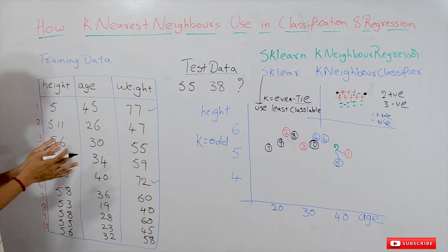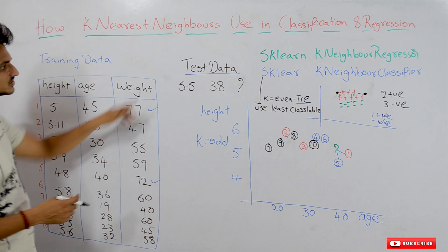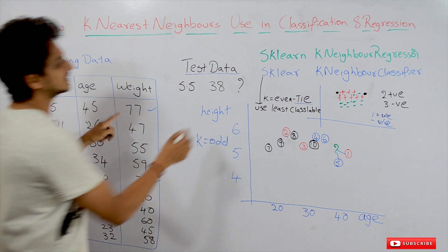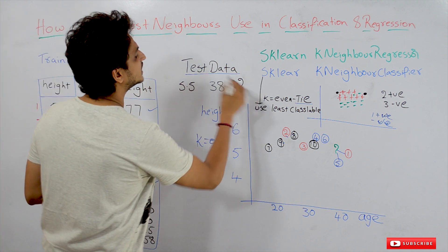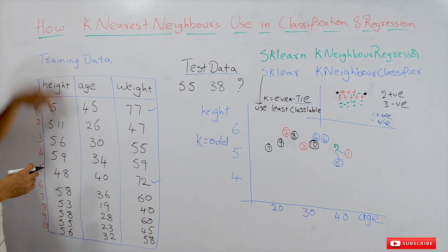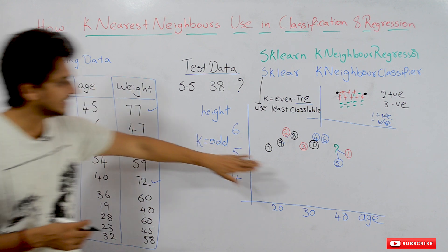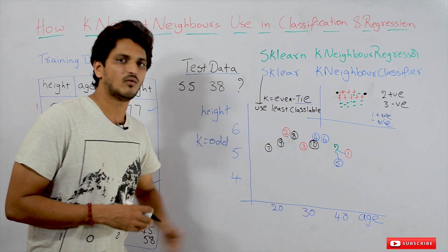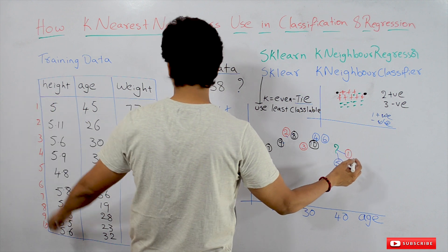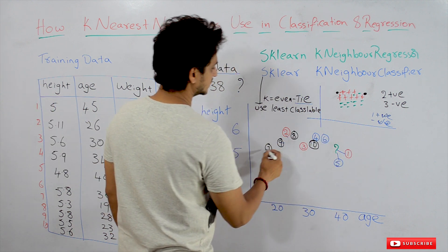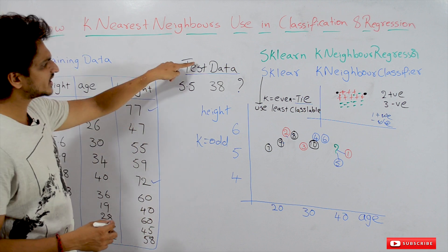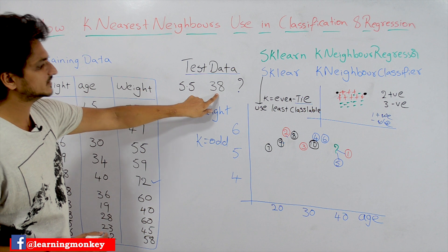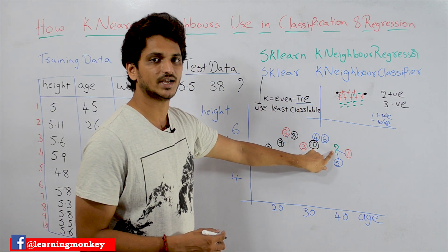So how does K-Nearest Neighbors work on regression datasets? Let's take a testing dataset where height and age are given as inputs, and we have to identify the weight. The height and age are plotted in two dimensions: the x-axis is taken as age and the y-axis is height. We have 10 data points plotted. Let's take our testing data point: height is 5.5 and age is 38 — this green point is our testing data point.